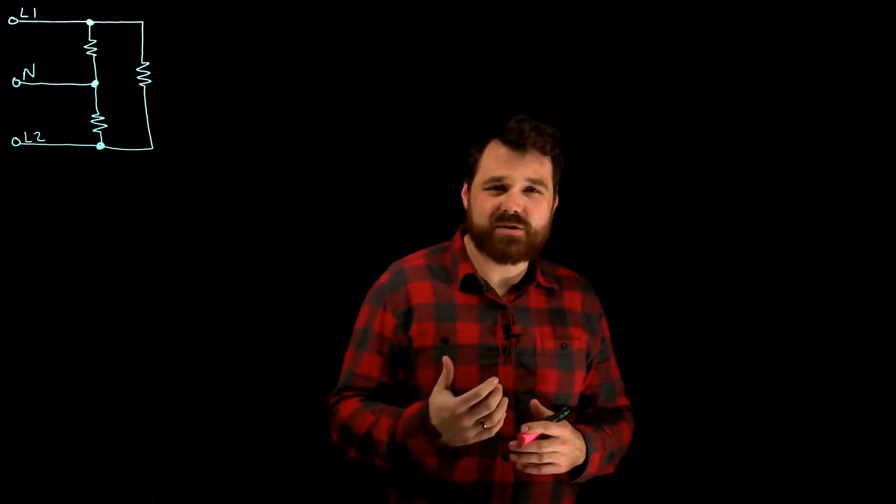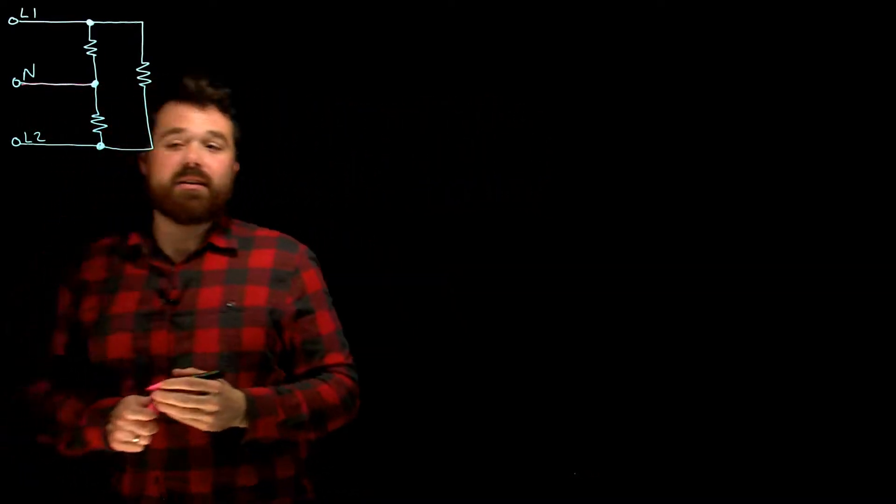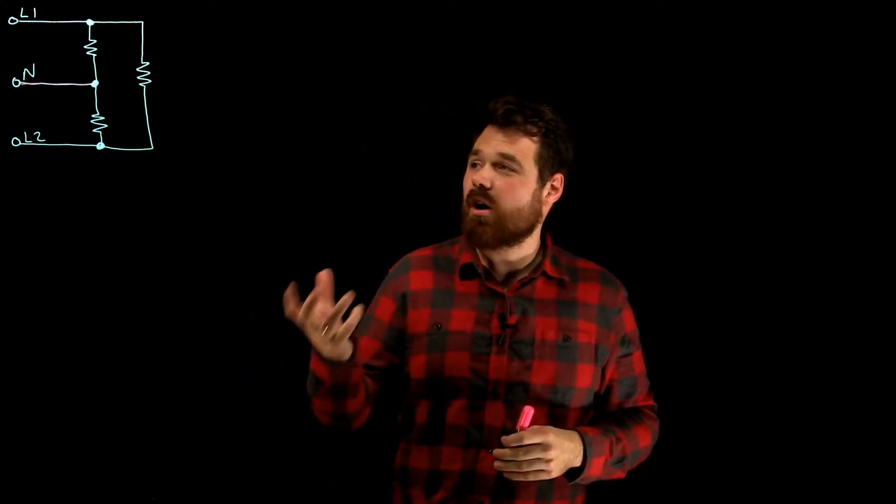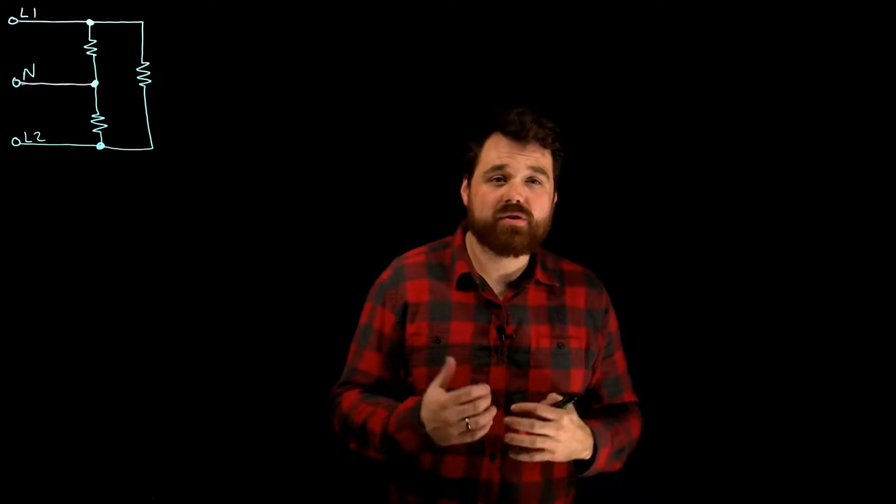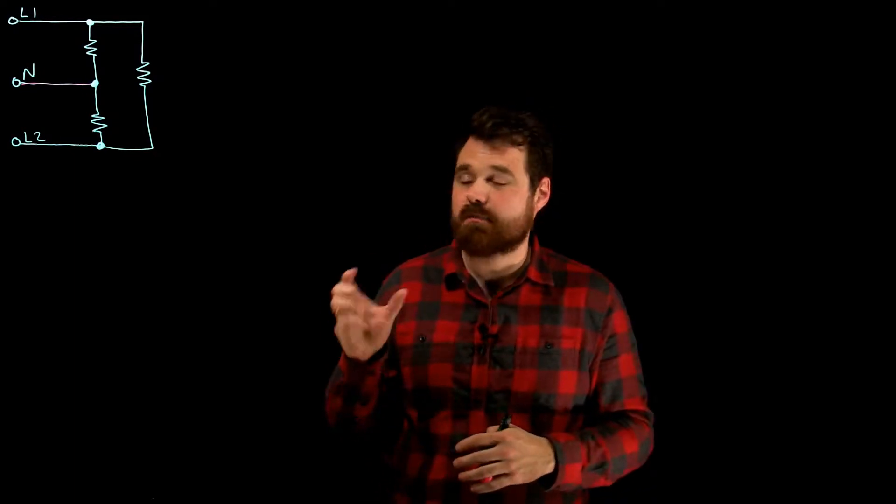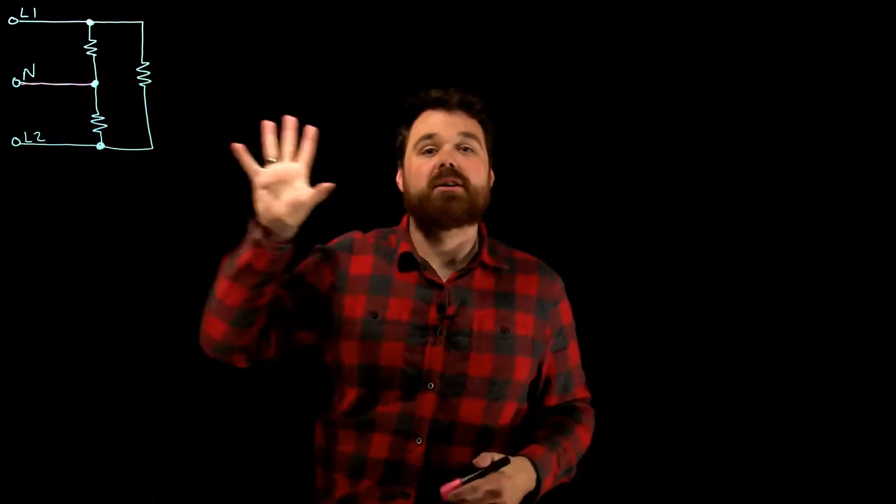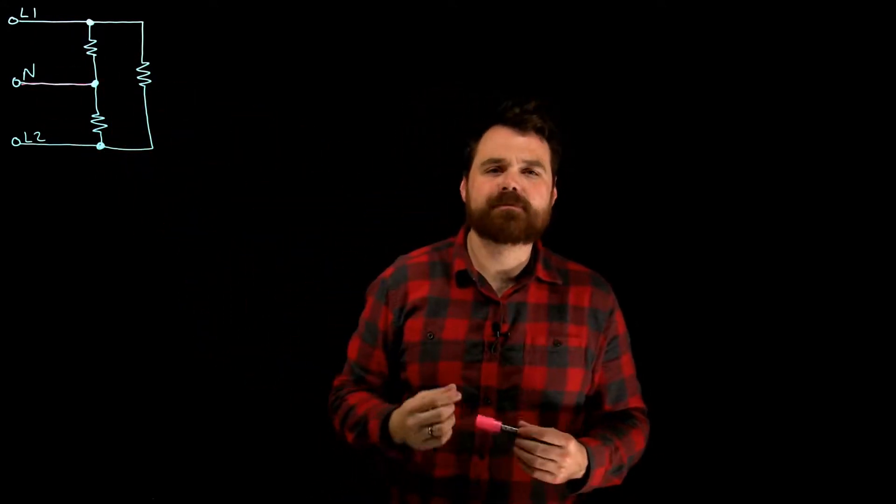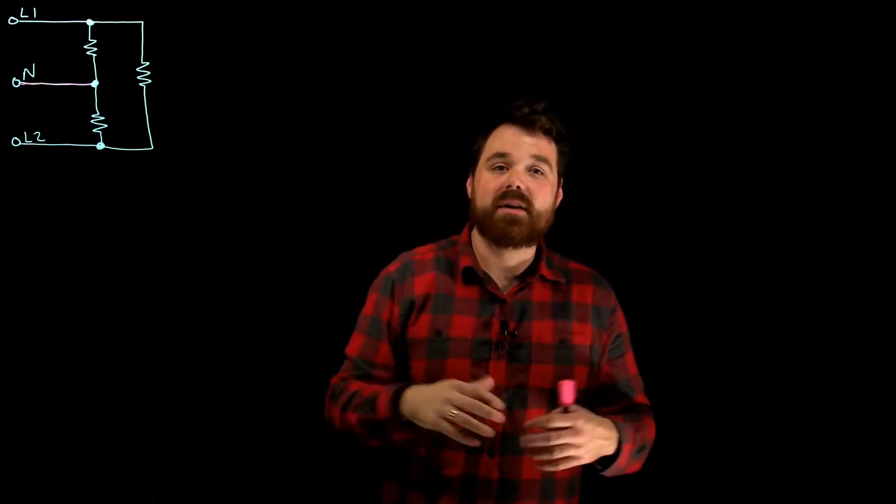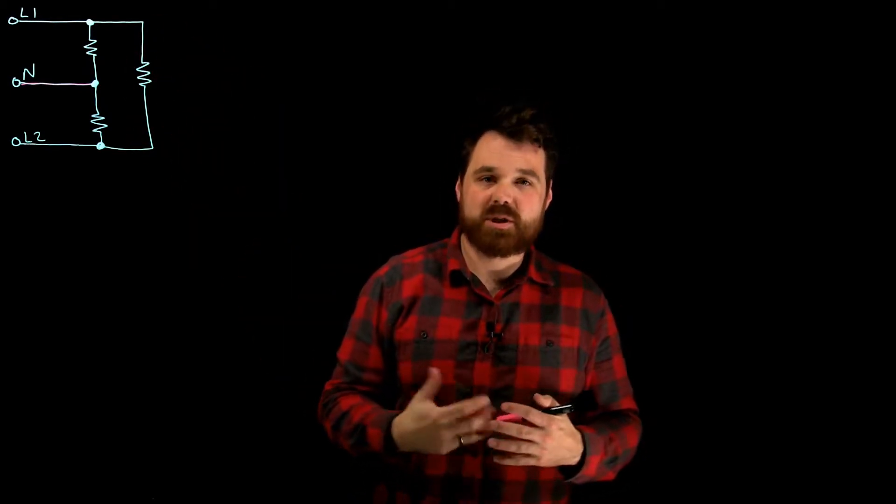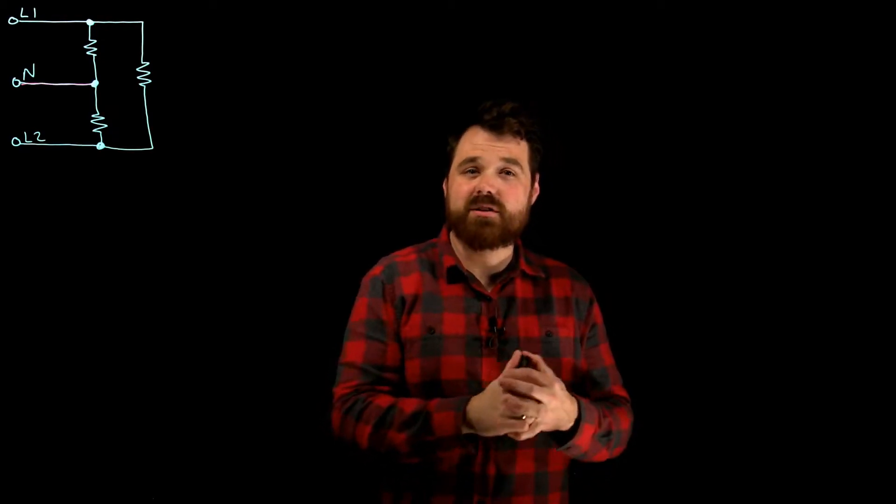So the Canadian Electrical Code allows us to actually reduce the size of that conductor because it's not always going to be seeing that full ampacity or the full load. The code book tells us that it has to be big enough to carry the unbalanced load, meaning I would have to do the calculation and make sure that I can carry the unbalanced load. But a lot of times because we have so many line-to-line loads, that unbalanced load is going to be a little bit smaller. So if that's the case, the code book is going to allow us to reduce the neutral size.